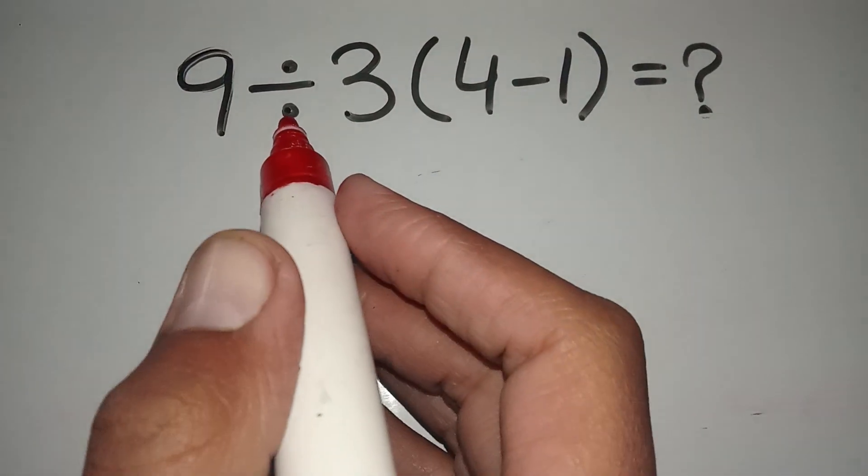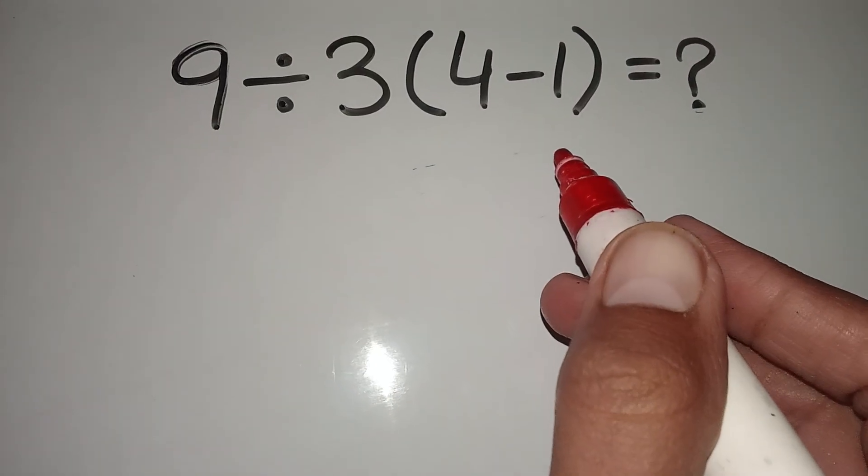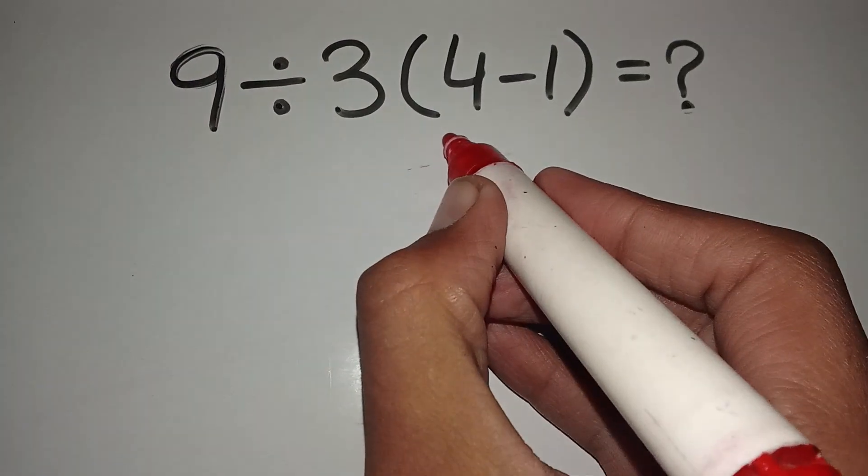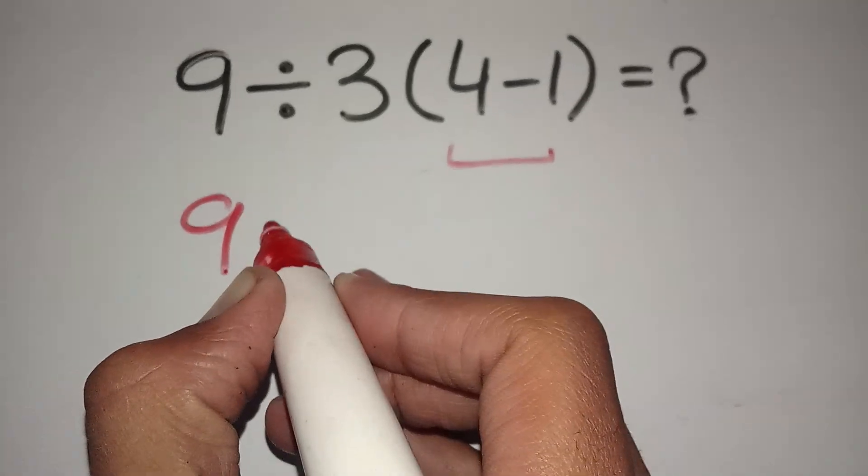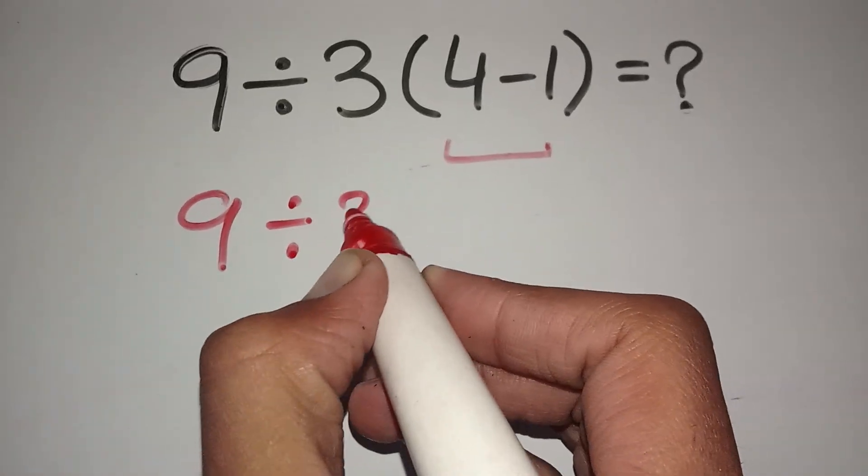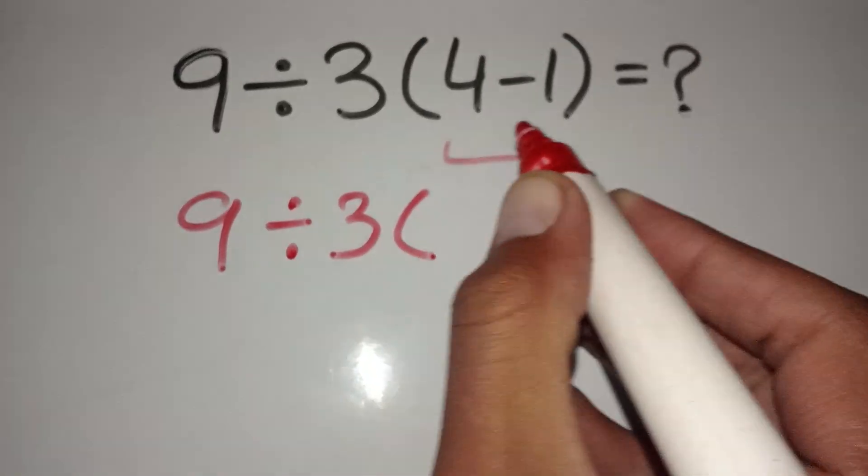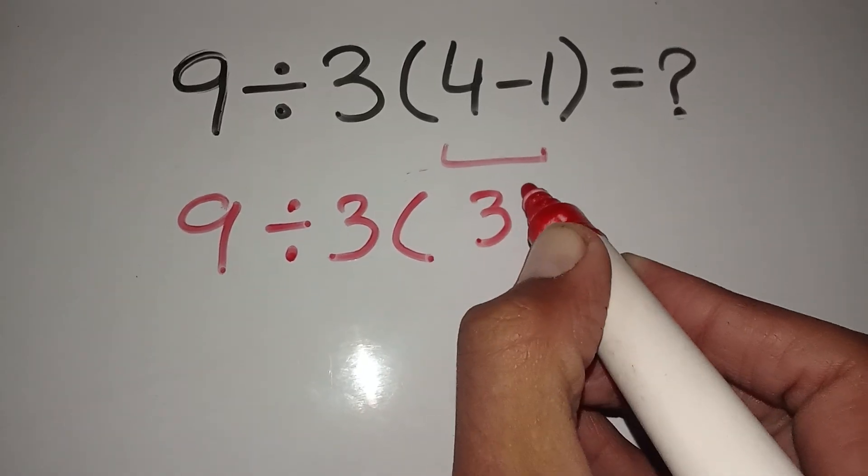Now dear student, we can move to solve this question by the correct method. So first we solve this parenthesis: 9 divided by 3, open parenthesis, 4 minus 1 equals 3.